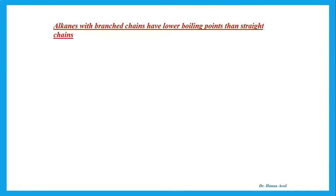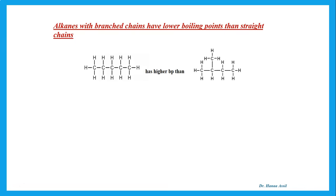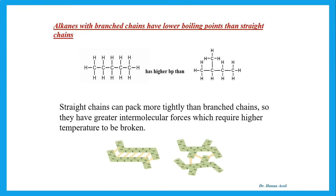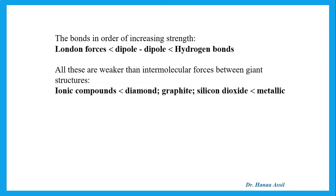Alkanes with branched chains have lower boiling points than straight-chain alkanes of the same molecular mass. Both have weak London dispersion forces, but straight chains can pack more tightly with other straight chains, giving greater intermolecular forces and a higher boiling point. Among simple molecular structures: London dispersion forces are weaker than dipole-dipole interactions, which are weaker than hydrogen bonds.